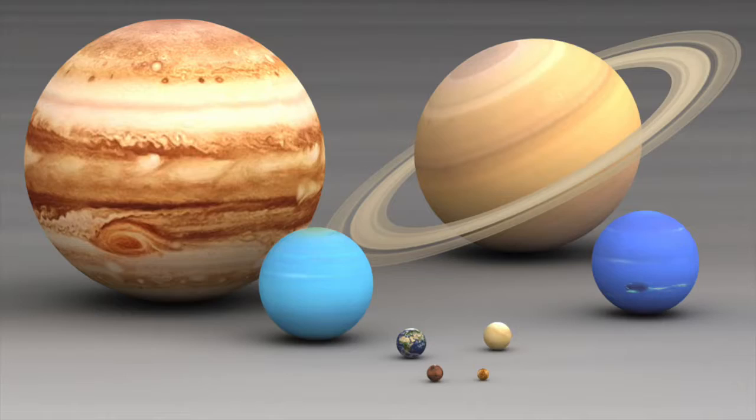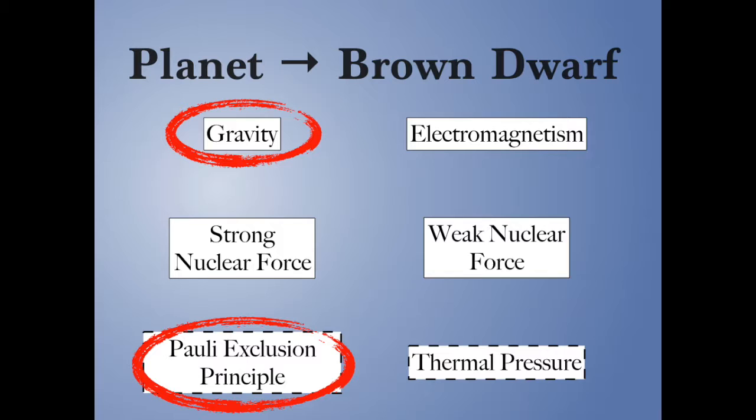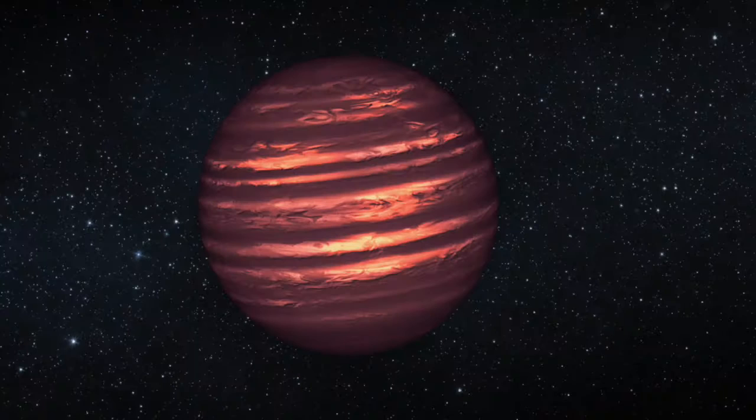There's a point at which ordinary hardness of matter isn't enough and you need something else to hold yourself up against gravity. When that quantum 'stuff really doesn't like being squished' principle kicks in, what you have is called a brown dwarf. If you're slightly bigger than Jupiter, ordinary atomic forces won't work for you — that's the next step up.